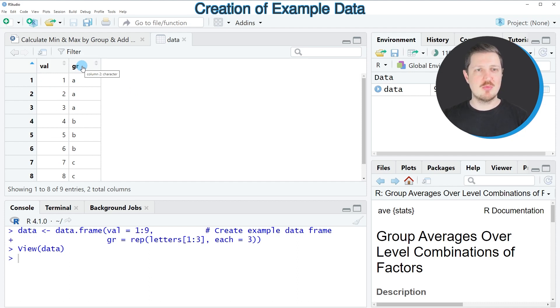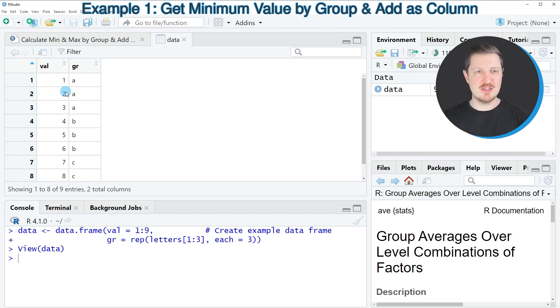Now let's assume that we want to calculate the minimum and maximum values of these groups and add these values as a new column to our data frame.